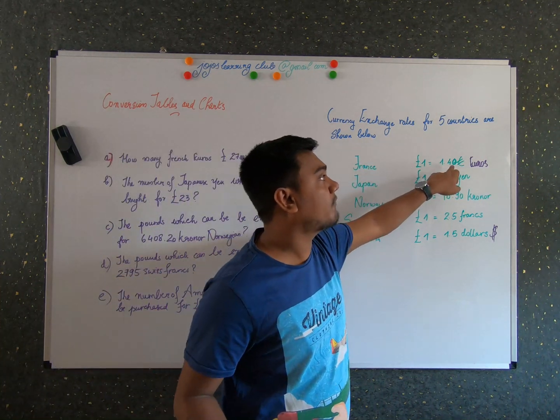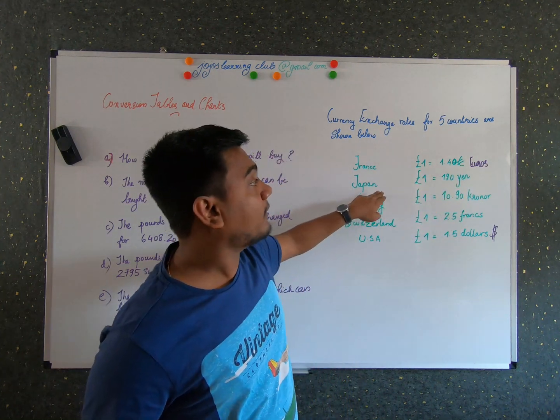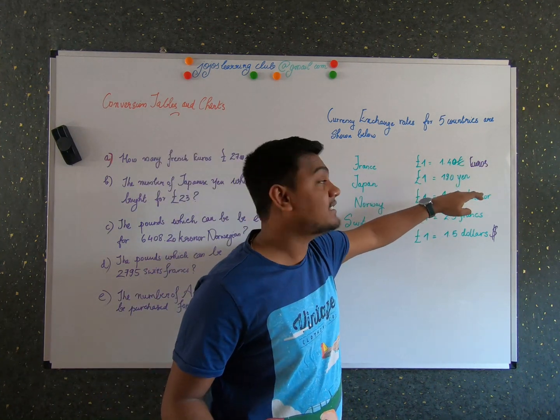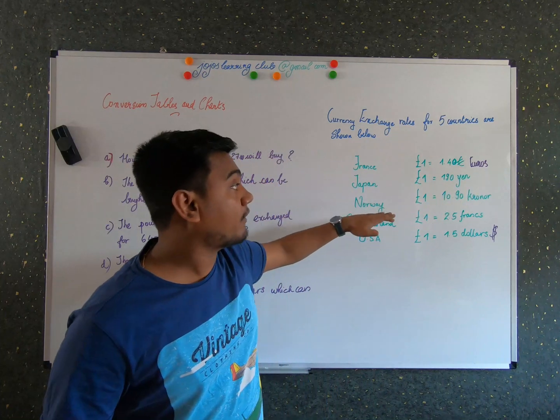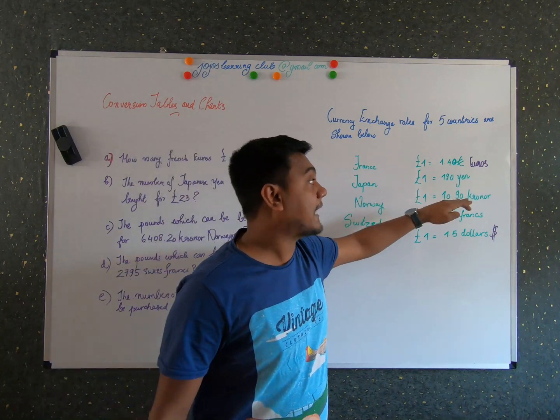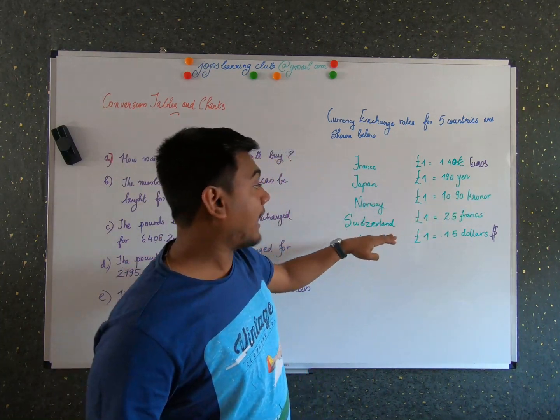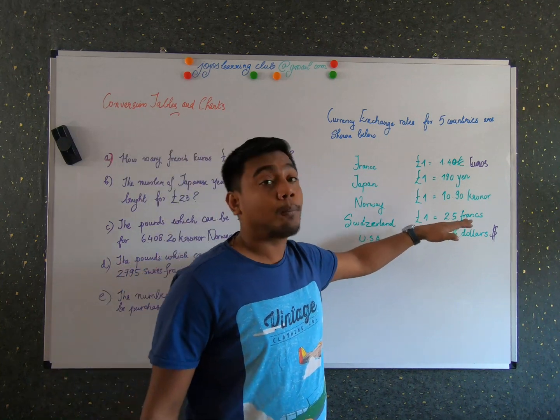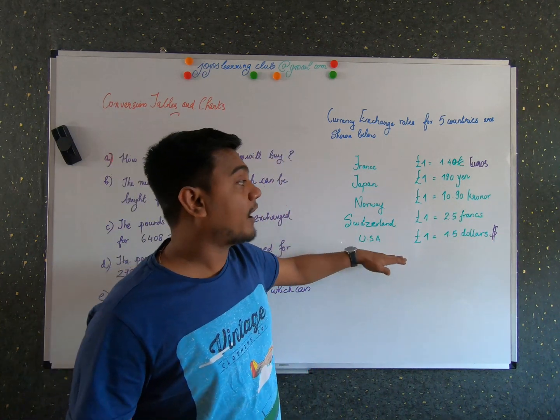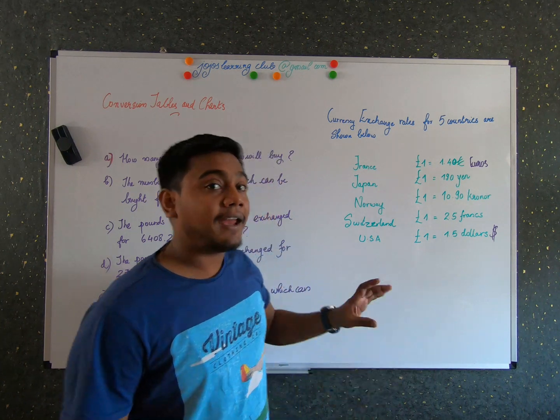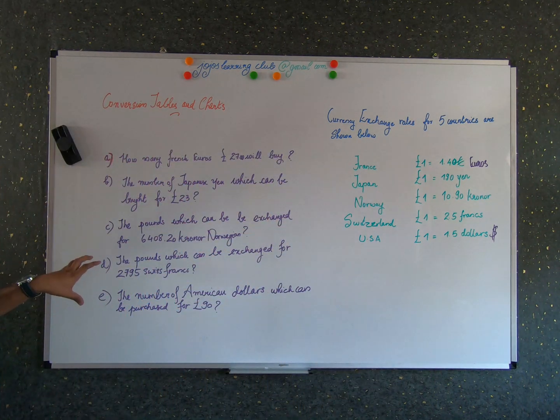For France, one pound is 1.40 euros. For Japan, one pound is 190 yen. And for Norway, one pound is 10.90 krona. And for Switzerland, one pound is 2.5 francs. And for USA, one pound is 1.5 dollars. And I have 5 questions based on it.